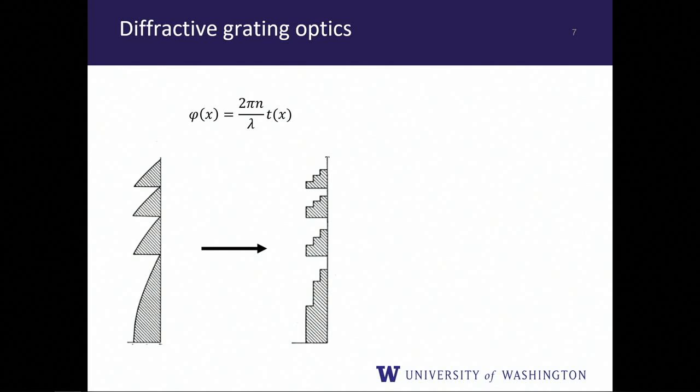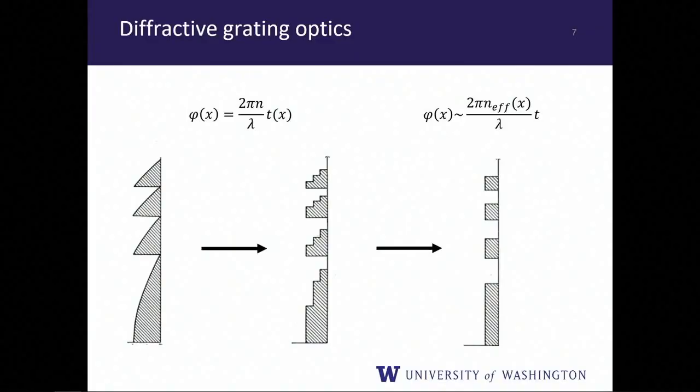These multi-level diffractive lenses work quite well, but using conventional top-down lithography, the first (Fresnel) is almost impossible to make and the multi-step version is still very hard. If you want four phase steps, you need four steps of lithography and four steps of etching. In general you want more than four — if you want eight, you need eight steps — and this gets complicated very quickly.